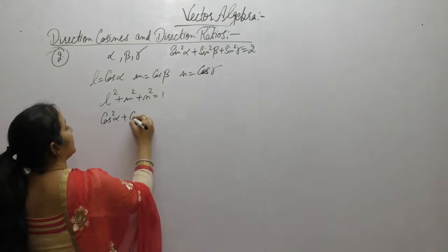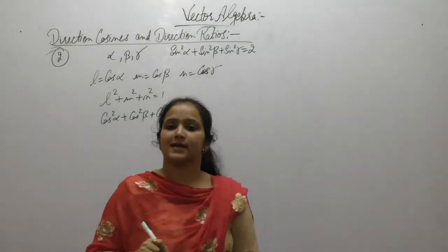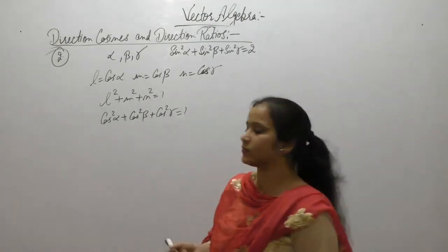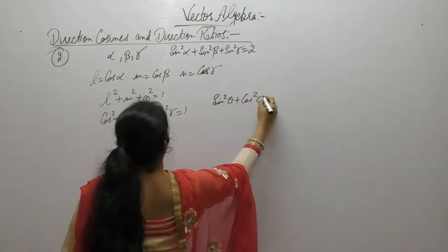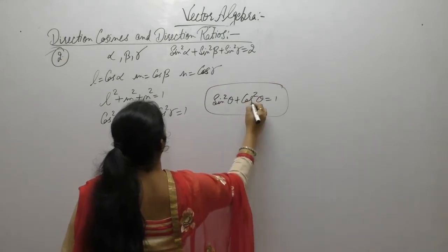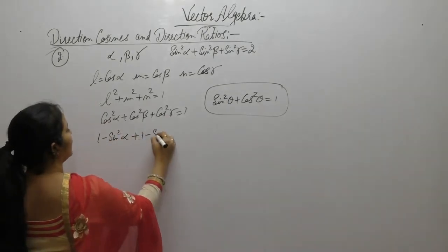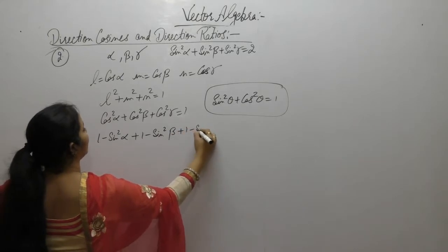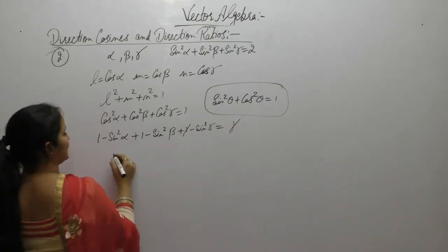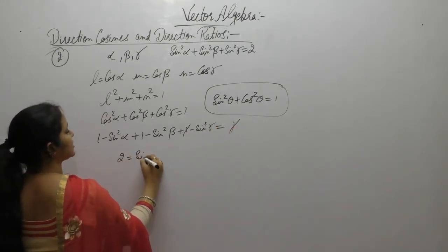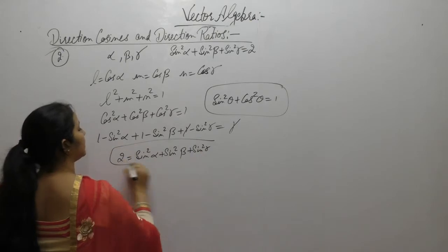So cos²α + cos²β + cos²γ = 1. We know the identity sin²x + cos²x = 1, so cos²θ = 1 - sin²θ. Substituting: (1 - sin²α) + (1 - sin²β) + (1 - sin²γ) = 1. The ones cancel appropriately, giving 3 - (sin²α + sin²β + sin²γ) = 1, therefore sin²α + sin²β + sin²γ = 2.